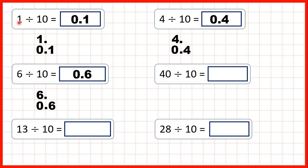Notice that 1, 4, and 6 are all numbers smaller than 10 — they're all smaller than what we were dividing by. That's why in our answers we have zero point before the tenths. So if the number you're dividing is smaller than the divisor, your answer will always be less than 1.